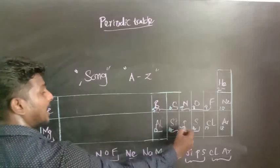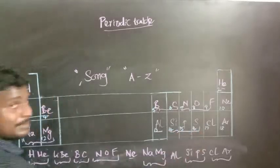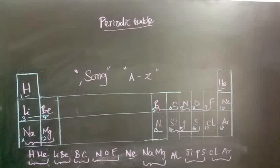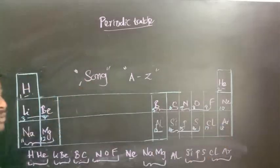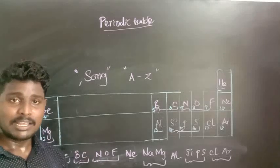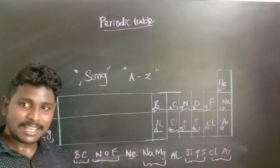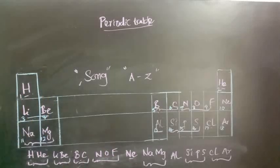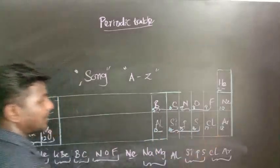Then comes 'Chips' — representing Silicon, Phosphorus, and Sulphur. We like to eat chips, so I'm going to take it as 'Chips'. And the next one is Chlorine and Argon — we are going to consider that as 'Clear', because when you eat chips continuously, you end up clearing them completely. So the full second group is: Namaj, Al, Chips, Clear — covering elements 11 through 18.